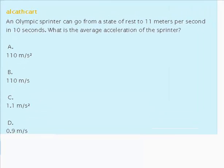An Olympic sprinter can go from a state of rest to 11 meters per second in 10 seconds. What is the average acceleration of the sprinter? And we've been given various acceleration options to choose from.